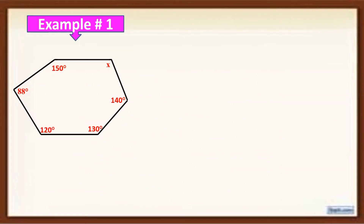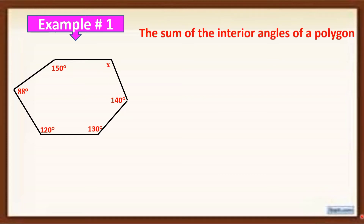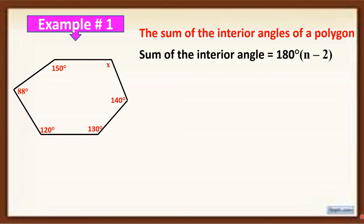Now let's have example number 1. As you can see, each interior angle has its measure and one of the angles is x. To get the value of x, first we must get the sum of the interior angles. We use the formula 180 degrees times (n minus 2), where n is the number of sides.